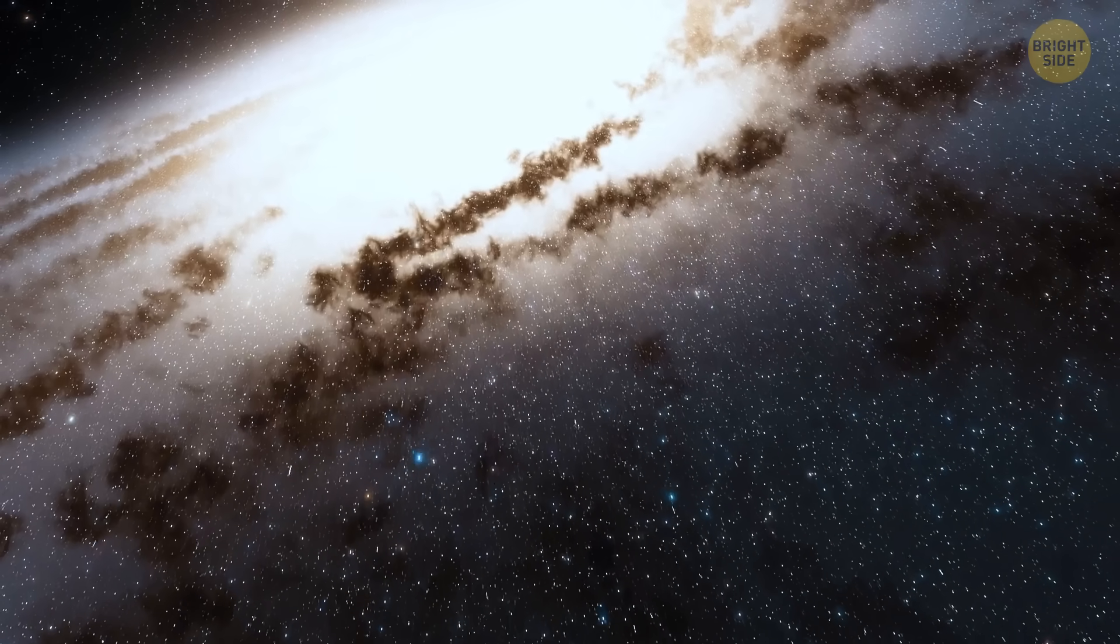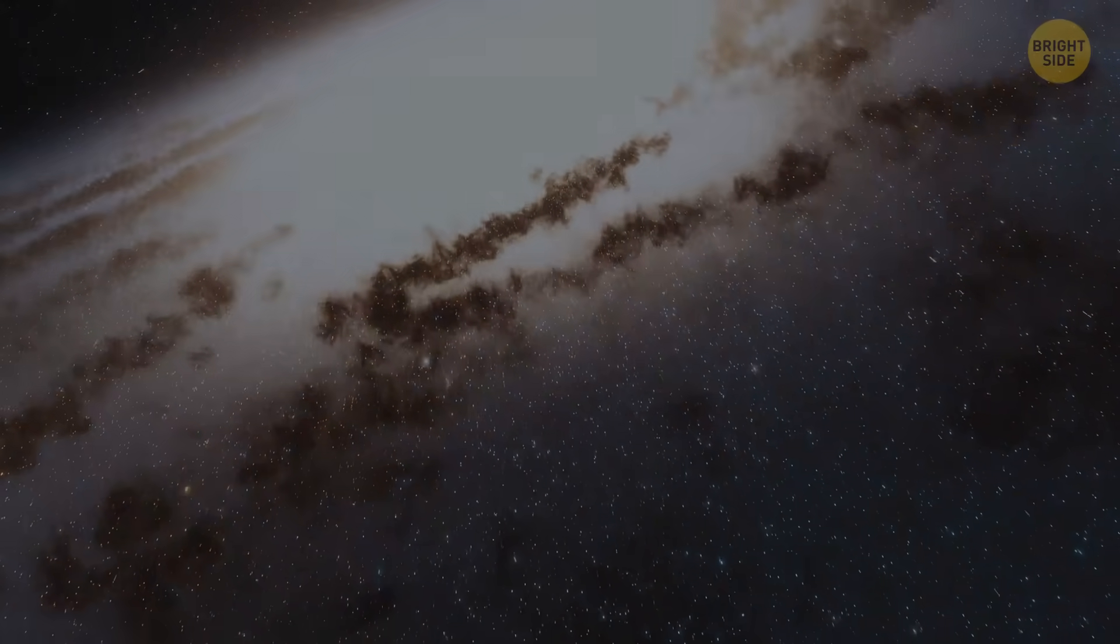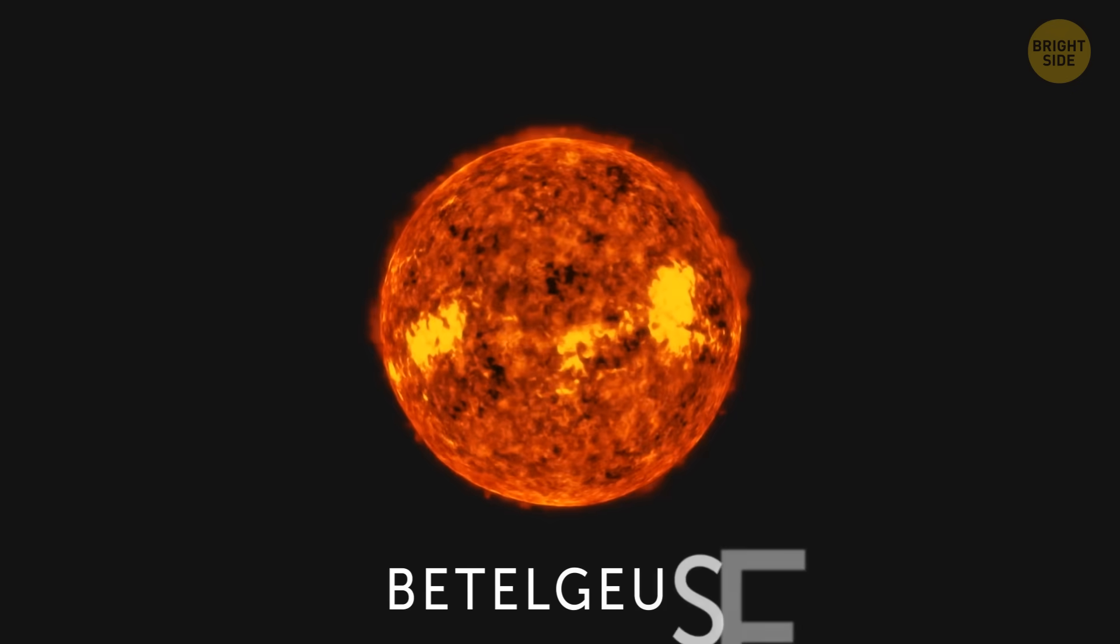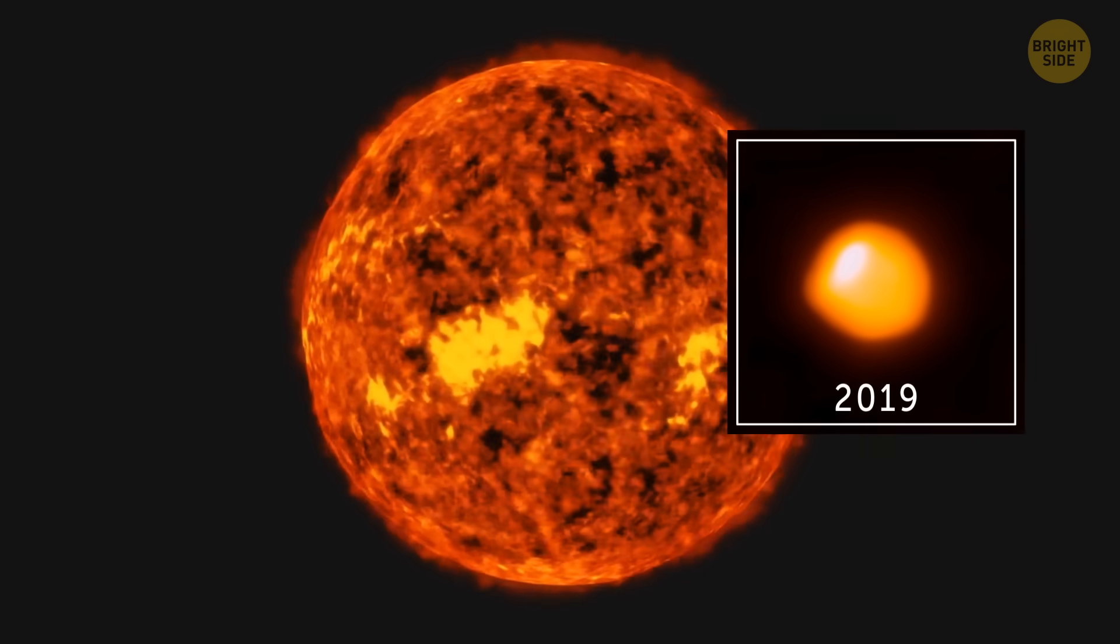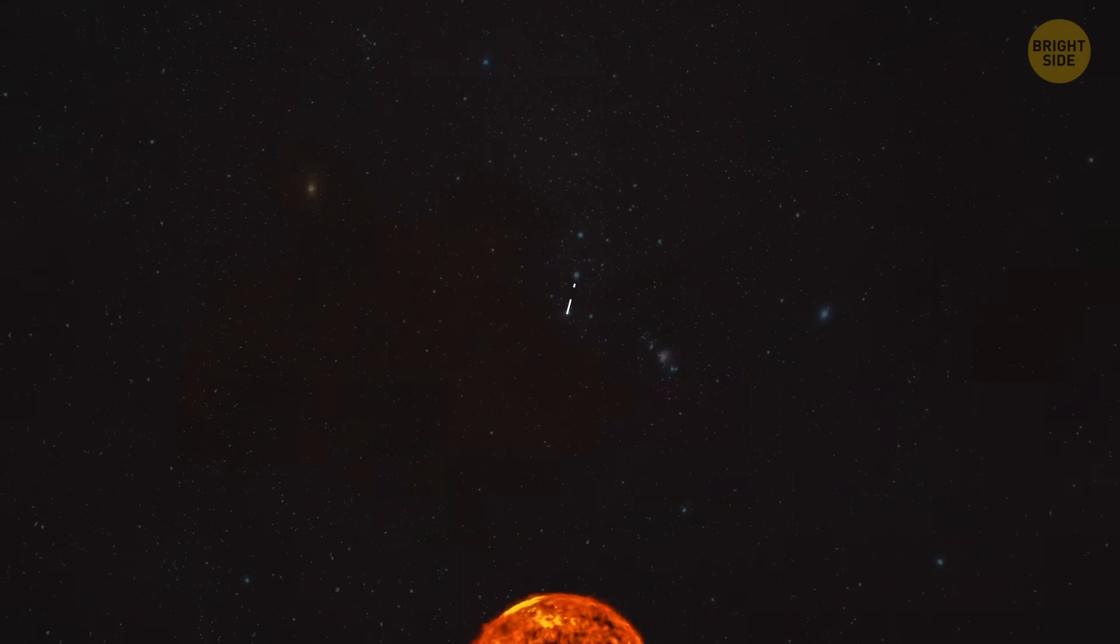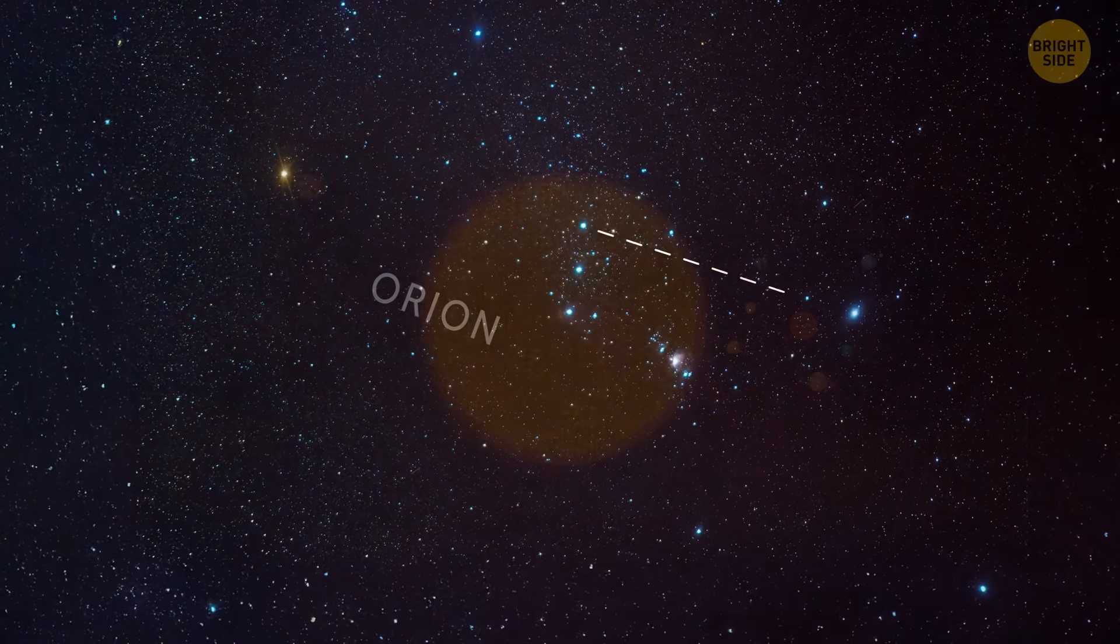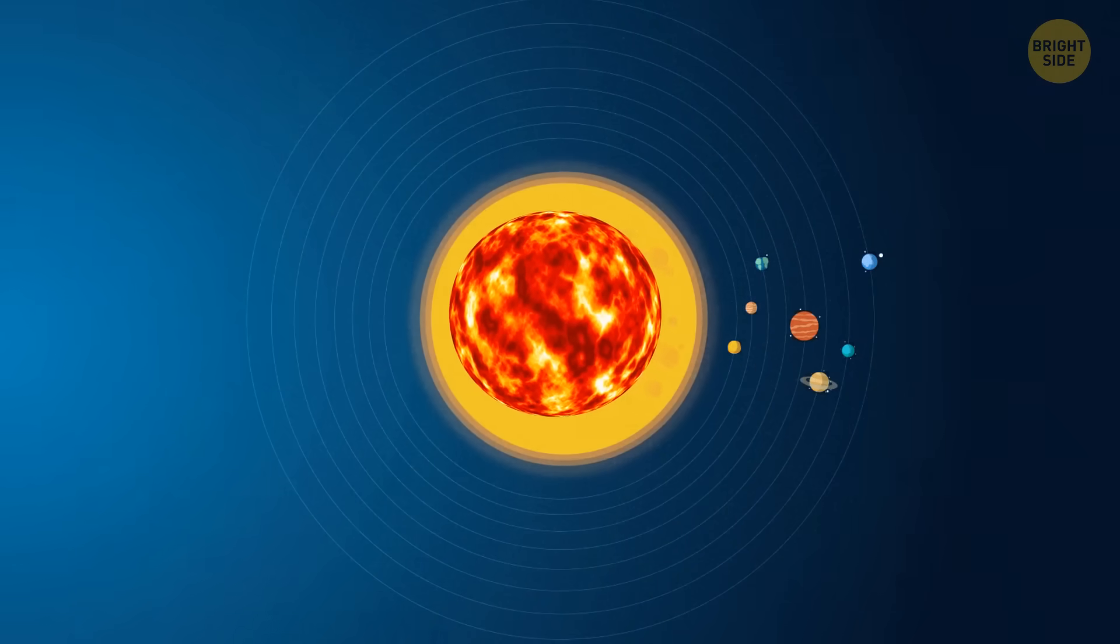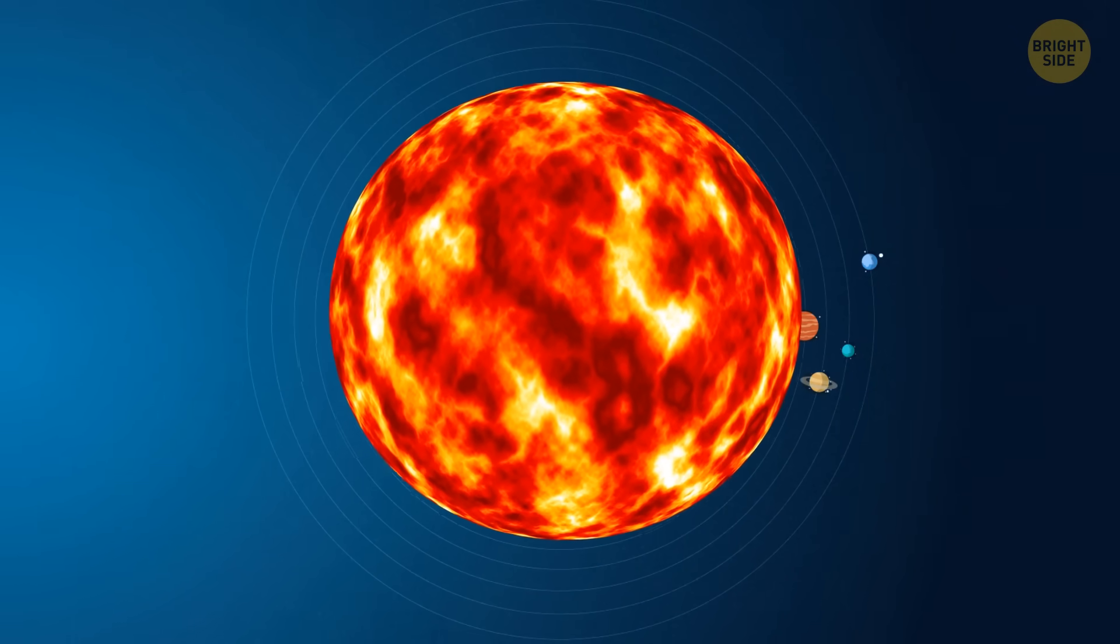Unfortunately, space dust blocks our view of most supernovae happening within the Milky Way. Betelgeuse, a late-stage red giant, exploded in 2019, but it wasn't the event we expected to see. This star is found in the constellation of Orion and is huge, so big that if we moved it to the center of our solar system, its outer edge would go way beyond the orbit of Jupiter.